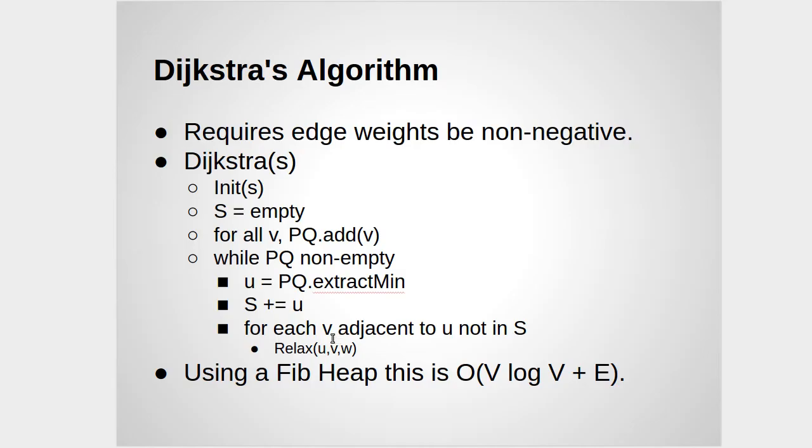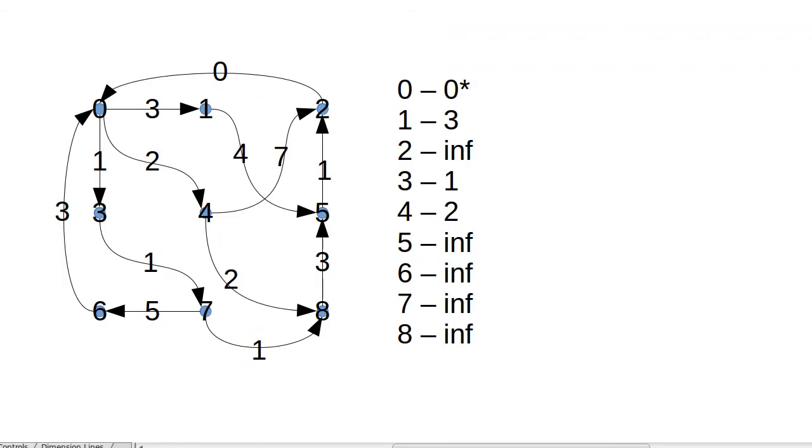Okay, so that was the first time through the while loop. We went through all of the adjacent edges, and we relaxed them all. So now our priority queue has the values that we see here. The one with the star has been removed from the priority queue, so it's not our min. When we remove the next one, it's going to be three, because its distance one is the smallest.